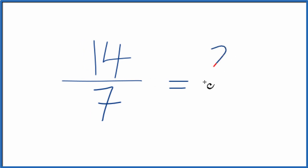14 divided by 7 is 2. 7 divided by 7 is 1.